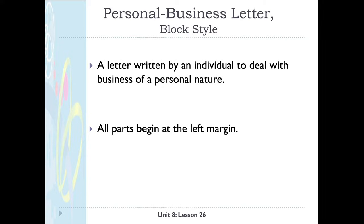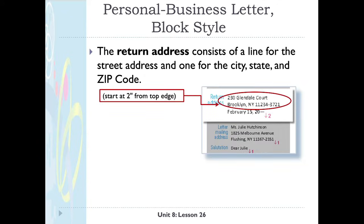All parts of our letter that we're going to type are going to begin at the left-hand margin, so we will not be indenting any of the paragraphs. The first part is our return address. This consists of a line for the street address and one for the city, state, and zip code. We will start two inches from the top edge, as shown in the red box on the left-hand side.